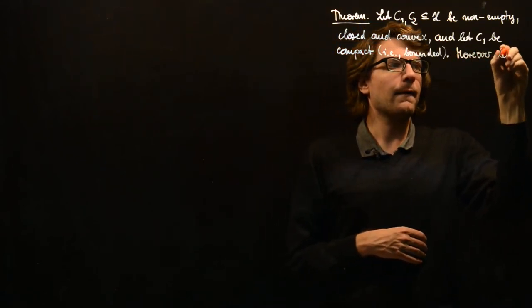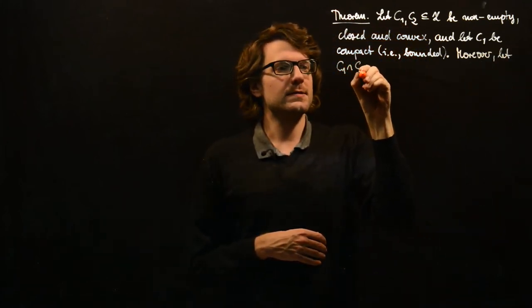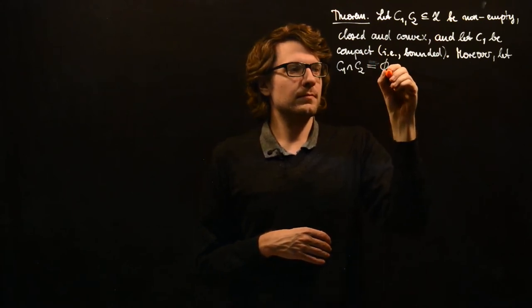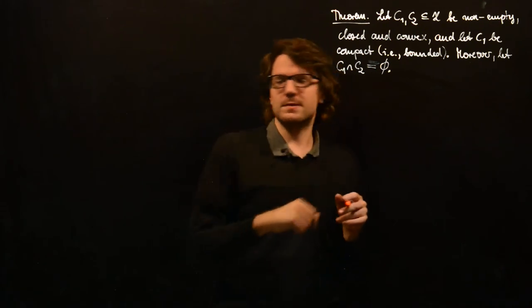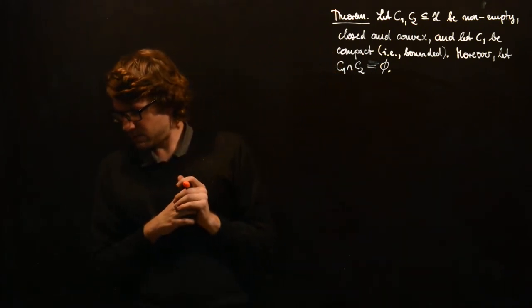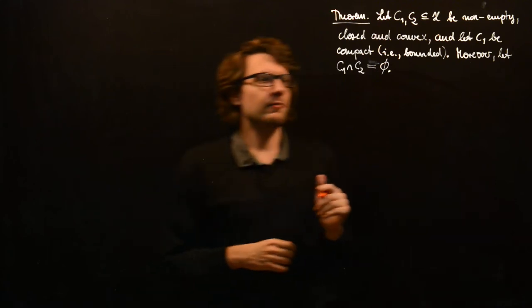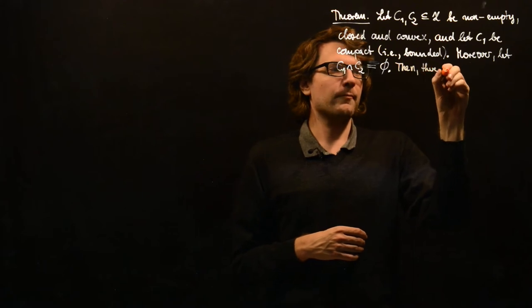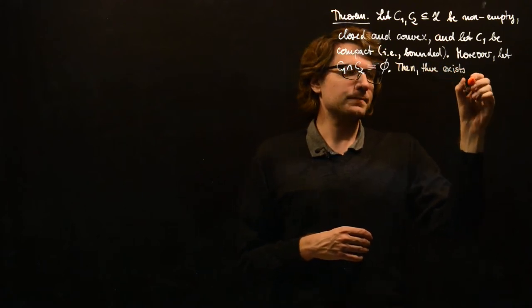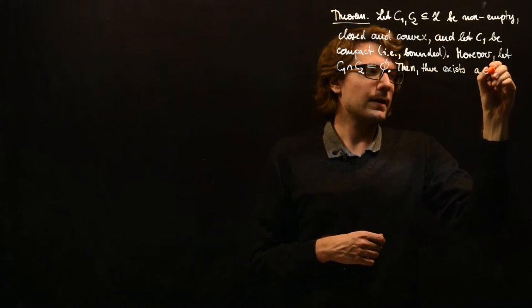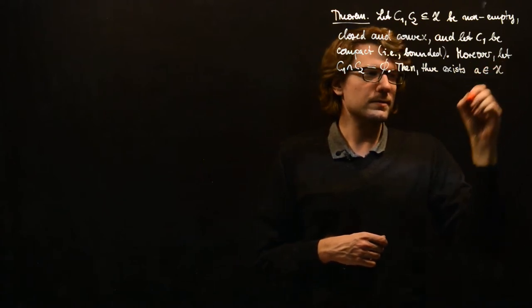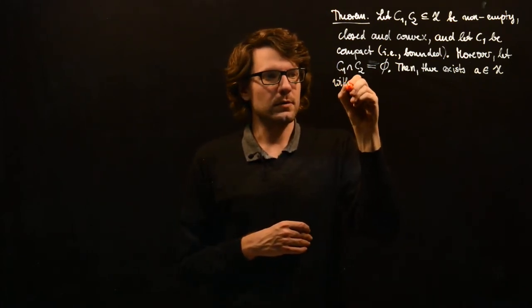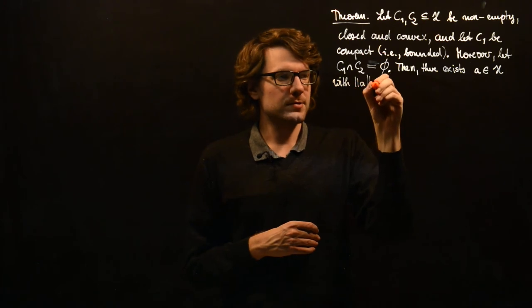Moreover, let the intersection of C1 and C2 be empty, which means that there are no common points in C1 and C2. Then there exists some A in H with the usual norm of A can be chosen to be 1.